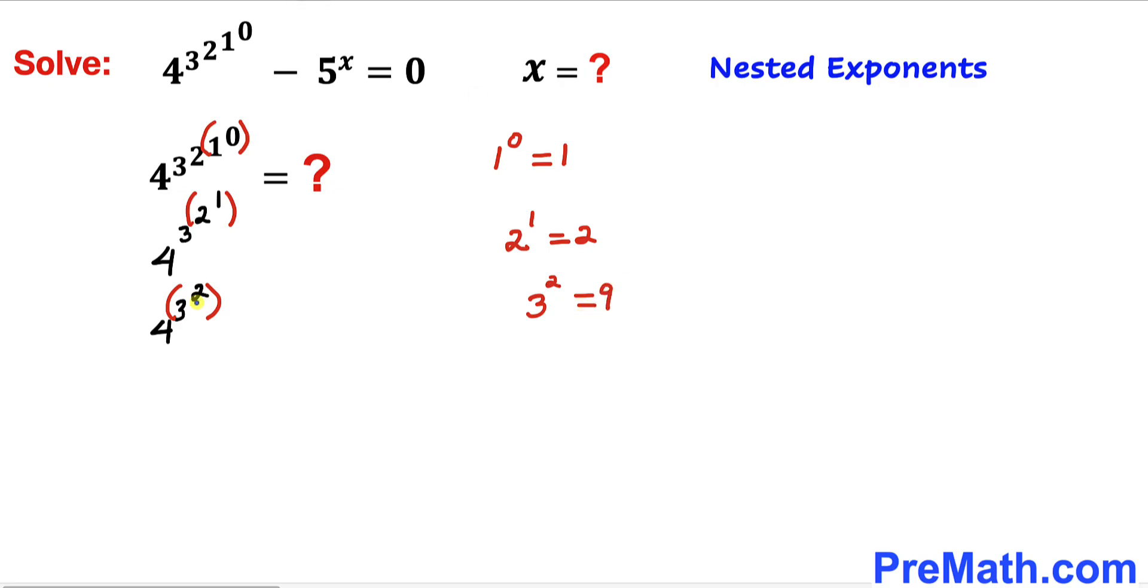So therefore I'm going to replace that whole thing with 9 over here. So therefore this turns out to be 4^9. And if we use the calculator, 4^9 equals 262,144.